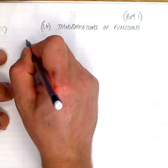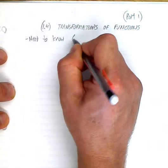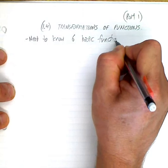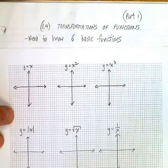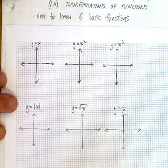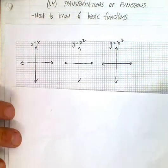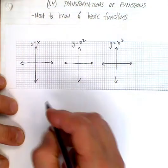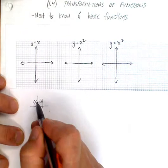You need to know six basic functions, which you saw in grade 10, and then we looked at the rest of them in grade 11. You need to know what they originally look like. If you don't know what these functions look like, your one resort is always a table of values. You pick an x, you find a y.